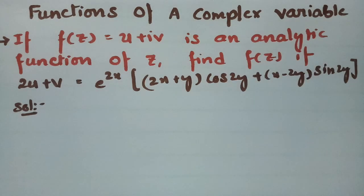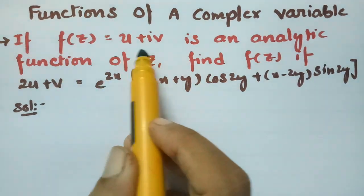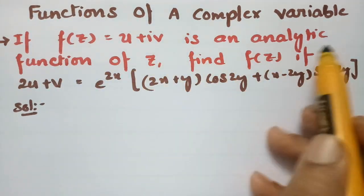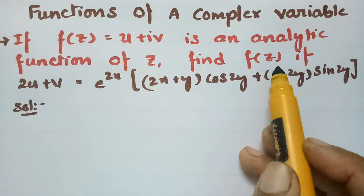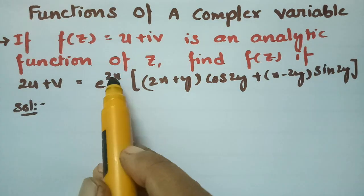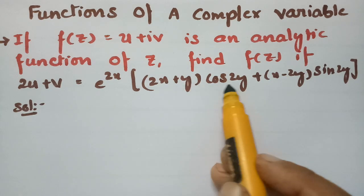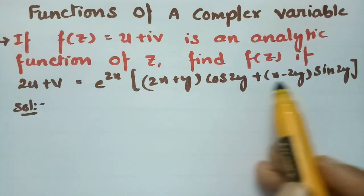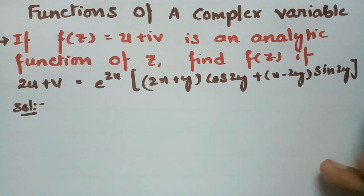Today's video I am going to solve a problem from functions of complex variables. If f(z) = u + iv is an analytic function of z, then find f(z) if 2u + v = e^(2x) · (2x + y)cos(2y) + (x - 2y)sin(2y).